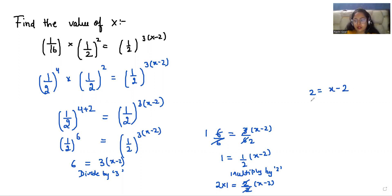Now I'm going to add 2 to both sides. 2 + 2 = x - 2 + 2. So 4 = x. The value of x is 4.